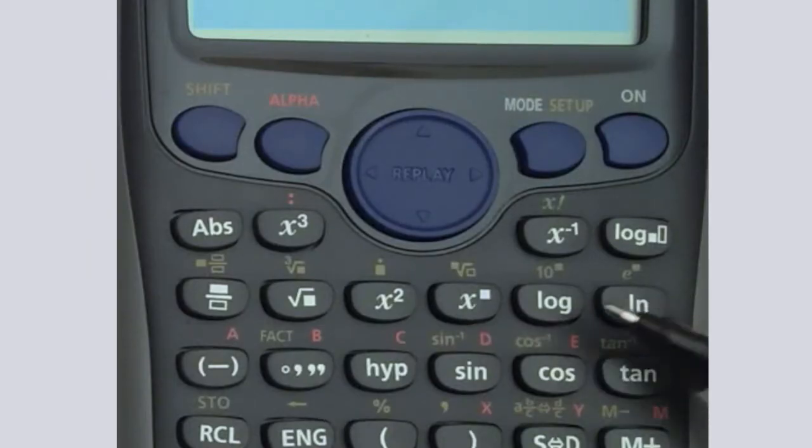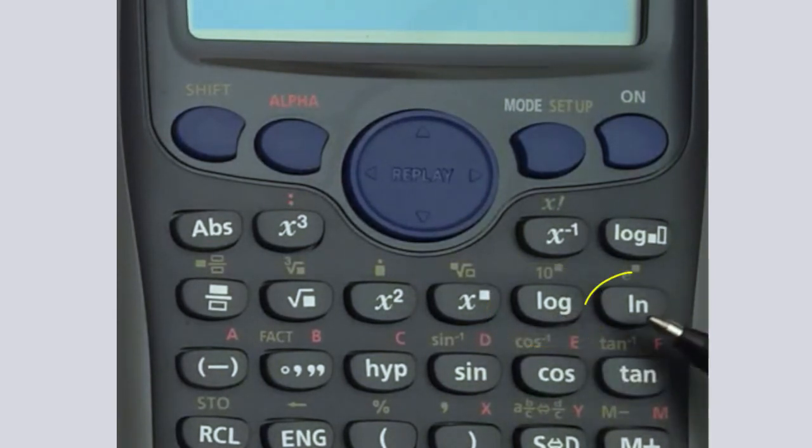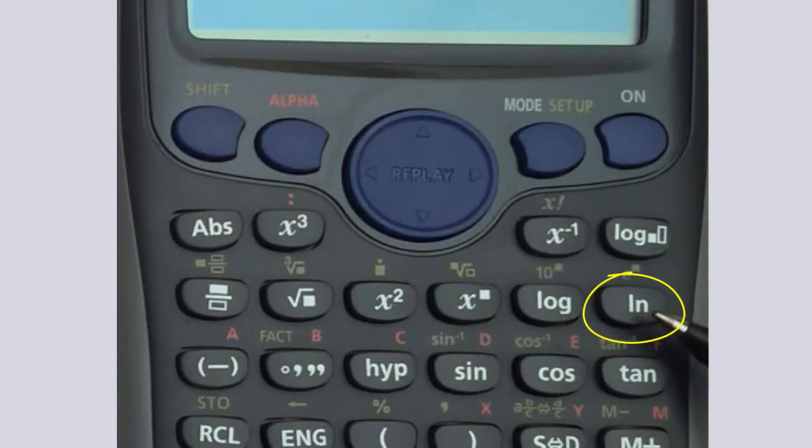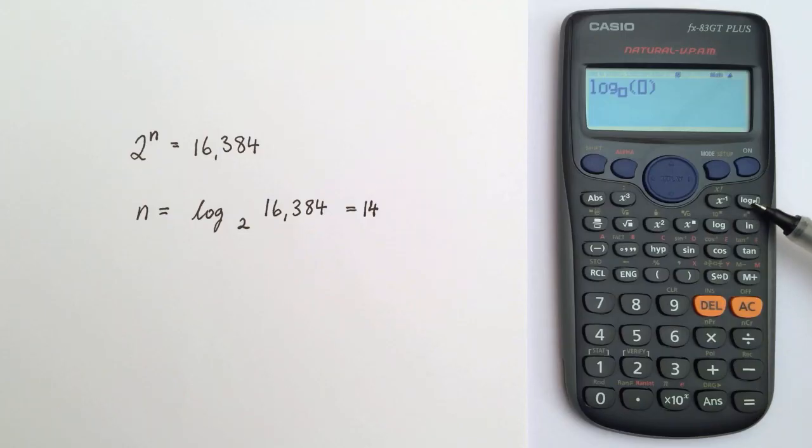I should point out that there are two other log functions on the calculator. The button that says log is log to the base 10, and this button here is ln, which is the natural log, which is log to the base e. But this function here is more useful than any of these because it allows me to get the log of any base I wish.